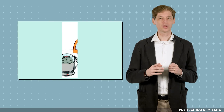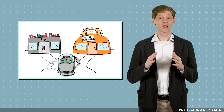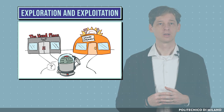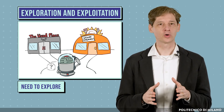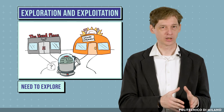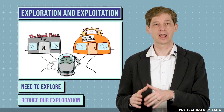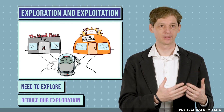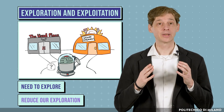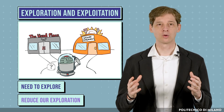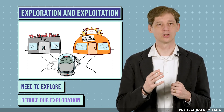Reinforcement learning research is growing quickly and in many directions. One of the central problems is finding the right balance between exploration and exploitation. We need to explore in order to understand the effects of our actions, but at the same time we want to reduce our exploration as our knowledge becomes more reliable. Finding the best way to move from exploration to exploitation is paramount for the success of reinforcement learning algorithms.